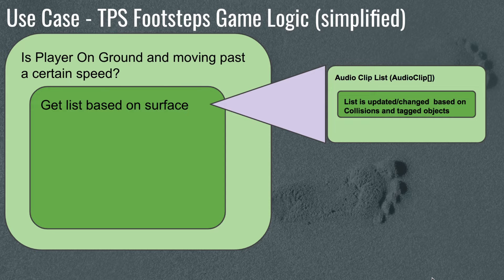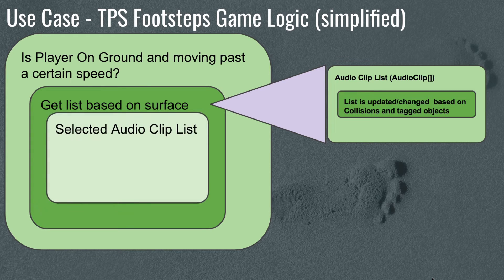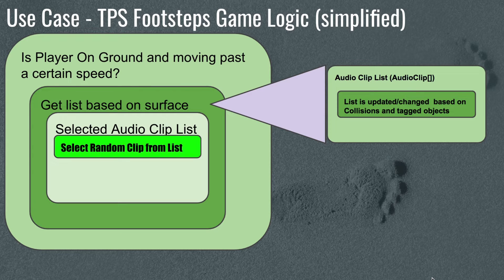Once we have that physics interaction with the surface, we'll have a variable that is a list of audio clips. We select which list to use based on that interaction. Then — the same as what we covered when discussing the trigger approach — we select a random clip from that list and play it. That's the rough idea of exactly what we're going to be doing.